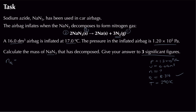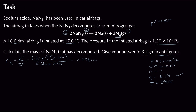Rearranging PV = nRT to find n(N₂) = PV/RT, substituting: (1.2 × 10⁵ × 0.016) / (8.314 × 290). This gives 0.796 moles of nitrogen. Marks so far: one for rearranging, one for unit conversions, one for substituting, one for the correct moles value.